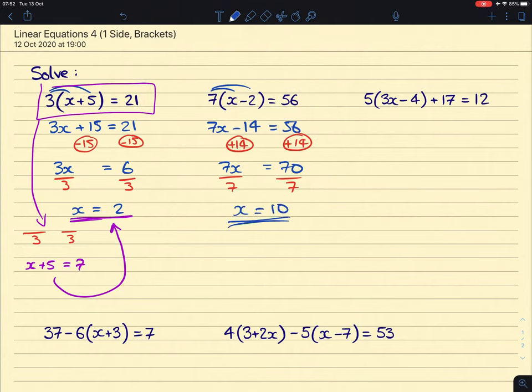The next one, break out the brackets again. 5 times 3x will give us 15x. 5 times a negative 4 will give us minus 20. We still have a plus 17 here, and that equals 12. We can simplify the left-hand side before we do some rearranging. We have this minus 20 plus 17, we simplify that, that gives us a negative 3.